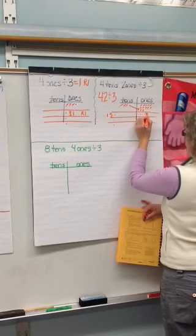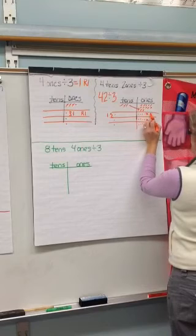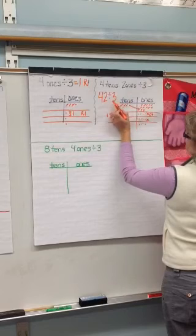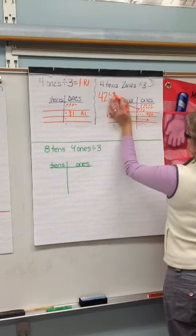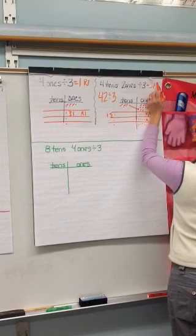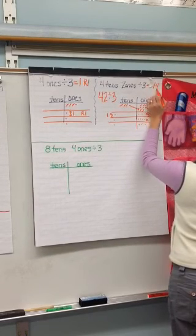Okay, let me cross those out. I went a little too far. So, here we have four in each of these groups. So, forty-two divided by three, or four tens to one divided by three, is fourteen.